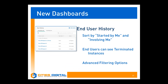The new dashboards aren't just improvements for administrators and managers. End users can sort their history by column and filter by whether forms were started by them or involving them. Another big change is that end users can now see the status of their own submissions — they'll know immediately if something was wrong with their form because they can see right here that it was terminated.